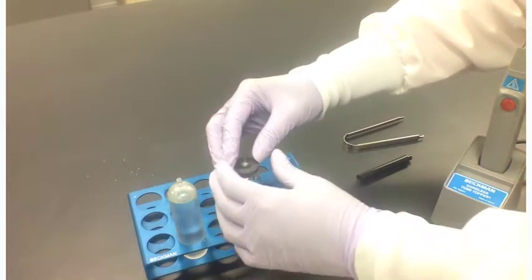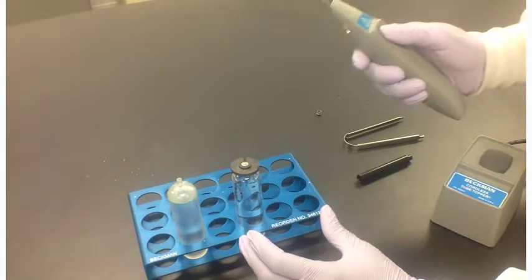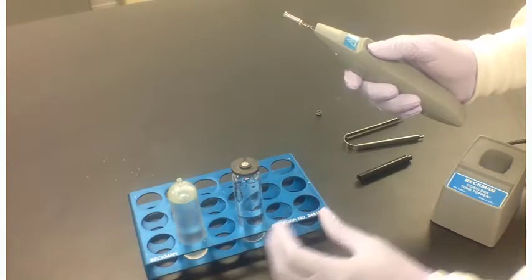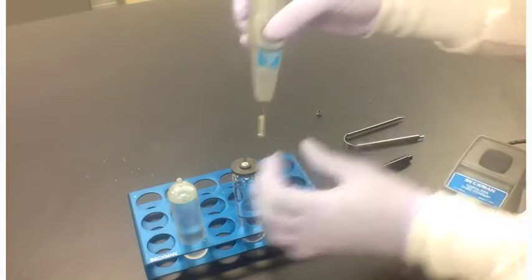Place a seal guide with the flat side down over the seal former. Turn the tube topper push button to use position. Press the push button and wait 3-5 seconds for the tip to heat.